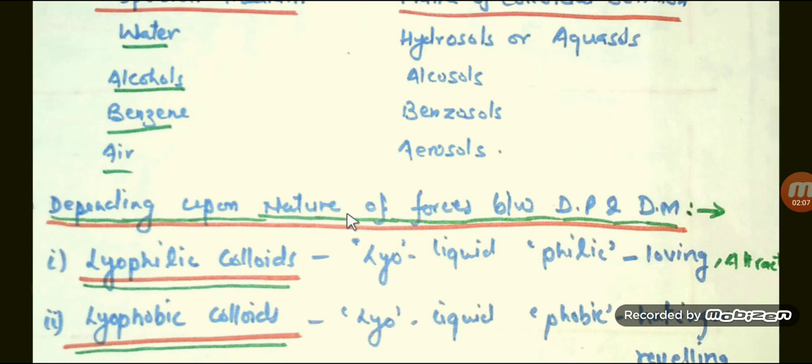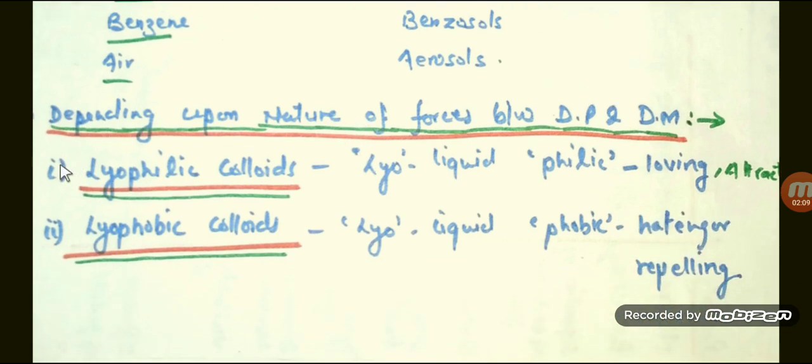Depending upon the nature of interaction between the dispersed phase and dispersion medium, we have two types: lyophilic colloid and lyophobic colloid. Lyo stands for liquid, philic stands for loving, and phobic stands for hating or repelling. In lyophilic colloids, there is force of attraction between disperse phase and dispersion medium particles. But in case of lyophobic colloid, there is force of repulsion between dispersed phase and dispersion medium. These are the classifications of colloids. Thank you.